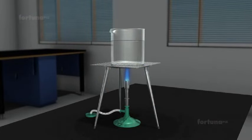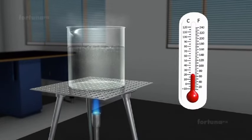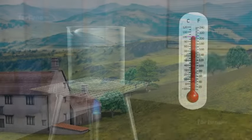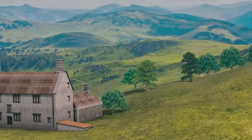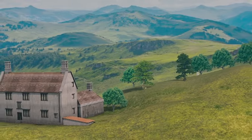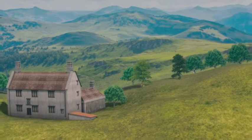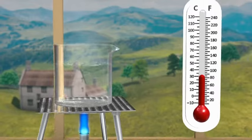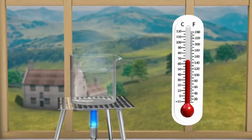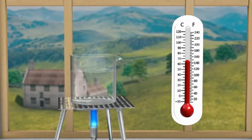Pressure also affects the change in states of matter. Under normal atmospheric pressure, water boils at 100 degrees Celsius or 212 degrees Fahrenheit. However, if we were to boil water in places with lower atmospheric pressure, such as the top of a mountain, it will boil much more quickly at a temperature lower than 100 degrees Celsius.